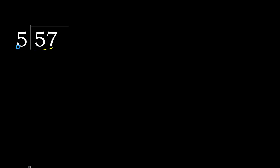57 divided by 5. 5 is not less, therefore work with 5. Here, 5 multiplied by which number is nearest to 5 but not greater? 5 multiplied by 2 is 10 — 10 is greater. Multiplied by 1 is 5, which is not greater. 5 minus 5 is 0.